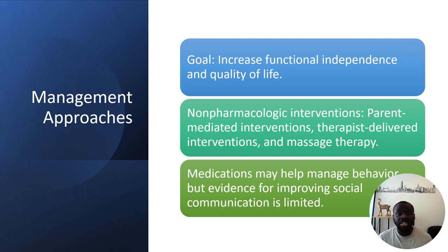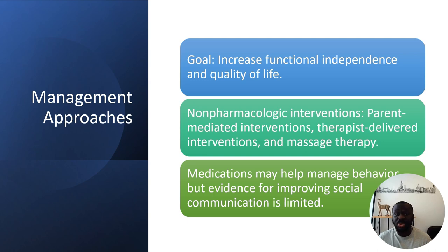Therapy-delivered interventions involve referring the child to a mental health therapist or psychologist who can help through massage therapy, exercise, healthy eating, and managing any stress or stressful events at home. We also need to consider referring the child or family to social services if there is a social problem that might be contributing to the child's difficulties.